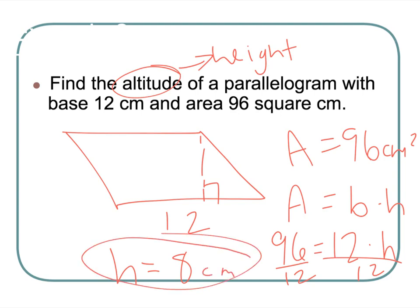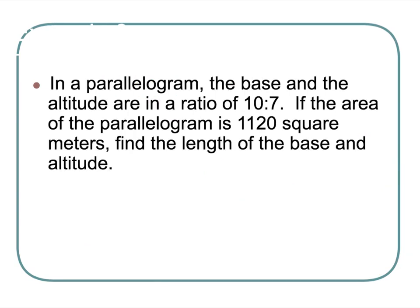Oh my goodness, is this another ratio problem? It is. In a parallelogram the base and the altitude are in a ratio of 10 to 7. Remember altitude is another word for height. If the area of the parallelogram is 1120 square meters, find the length of the base and the altitude.